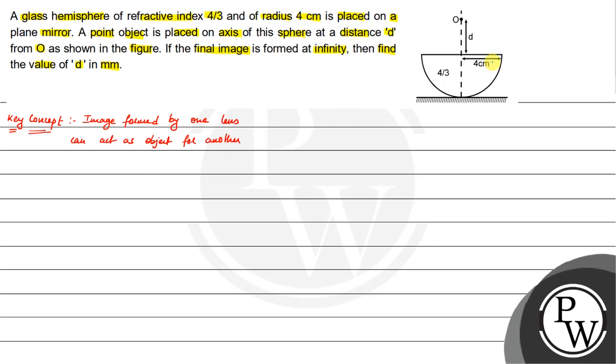Now, see here we have a glass hemisphere. When the ray comes this way and goes this way, it will show that the image is not going to be here. The object is placed at distance d, so our object distance u is minus d.